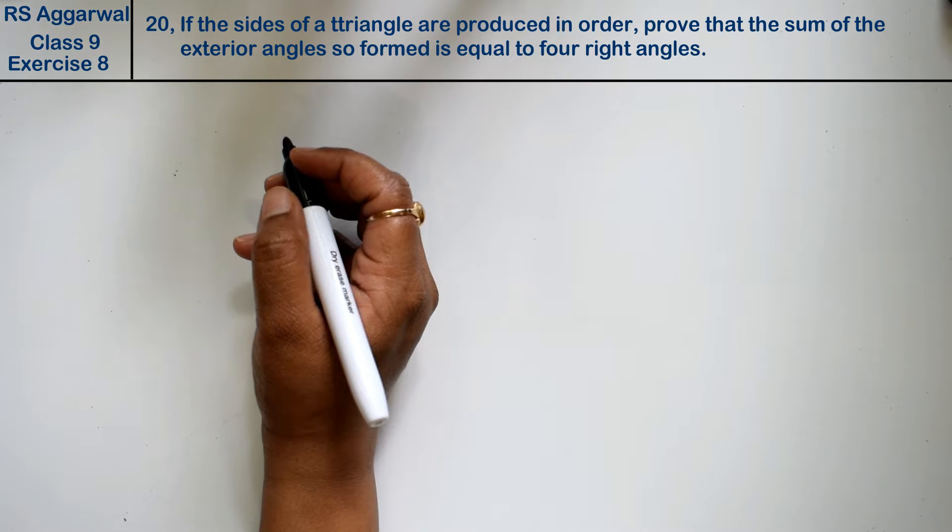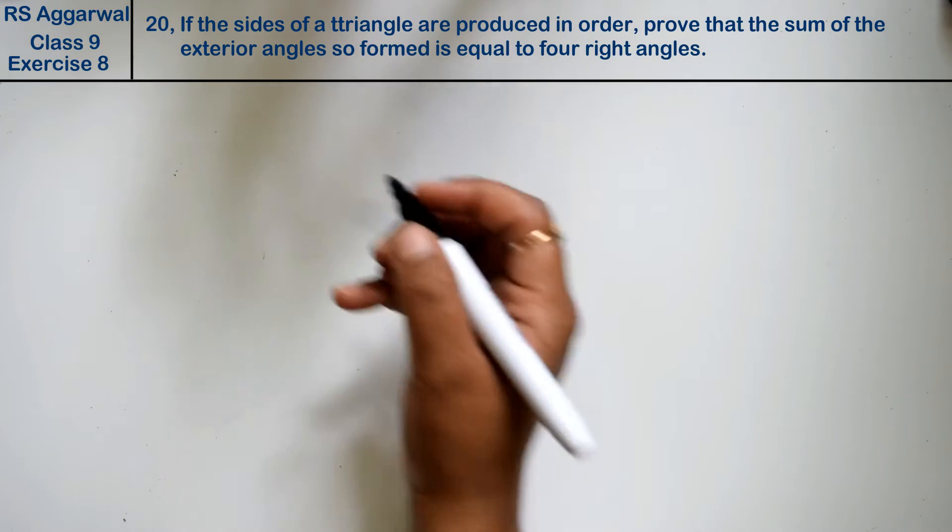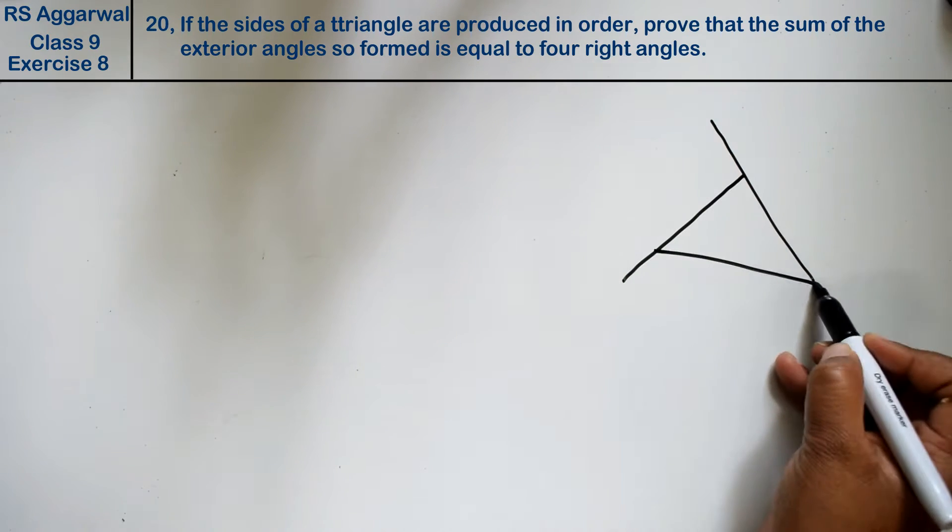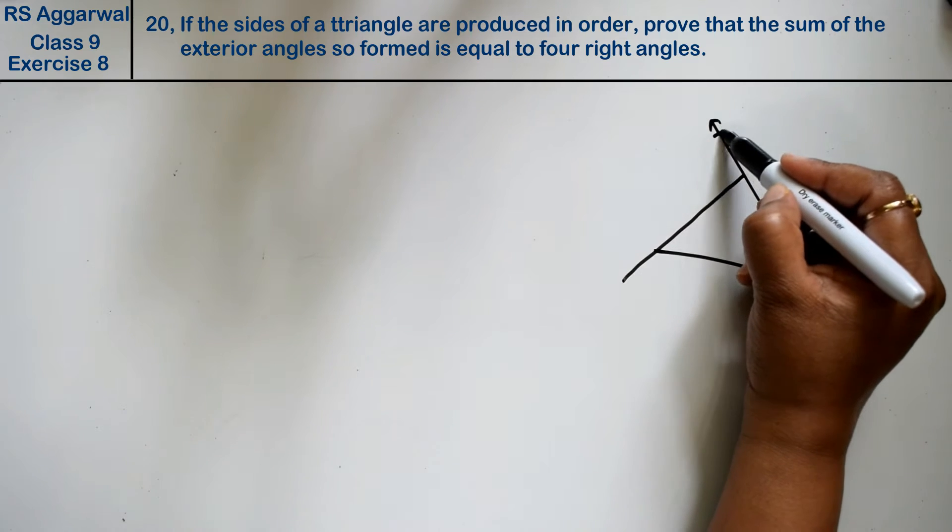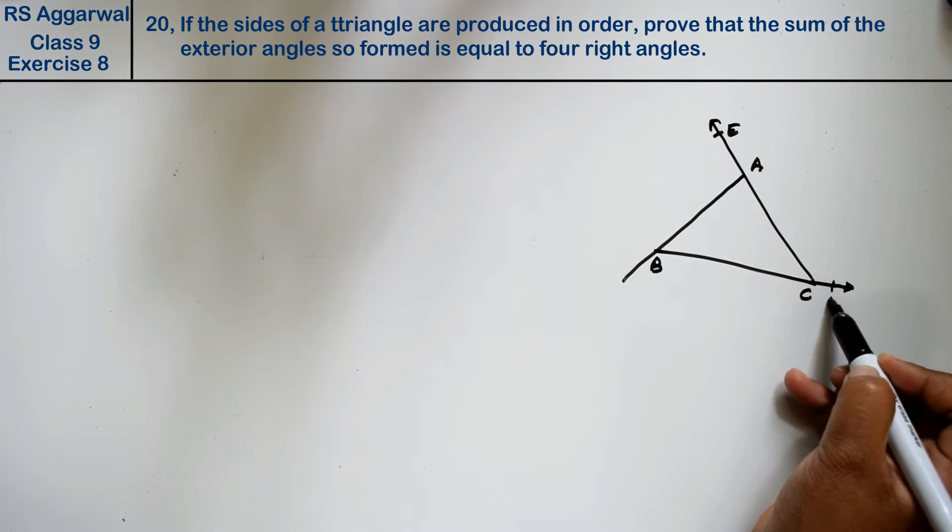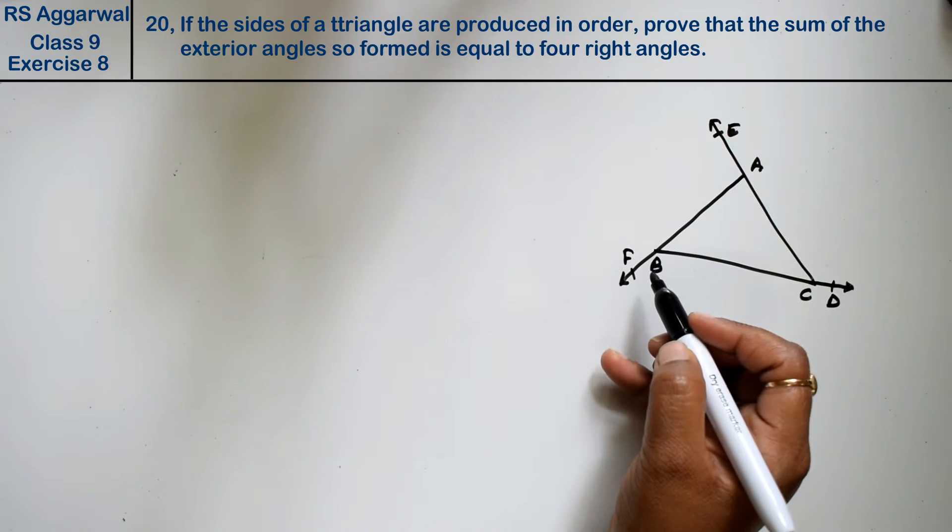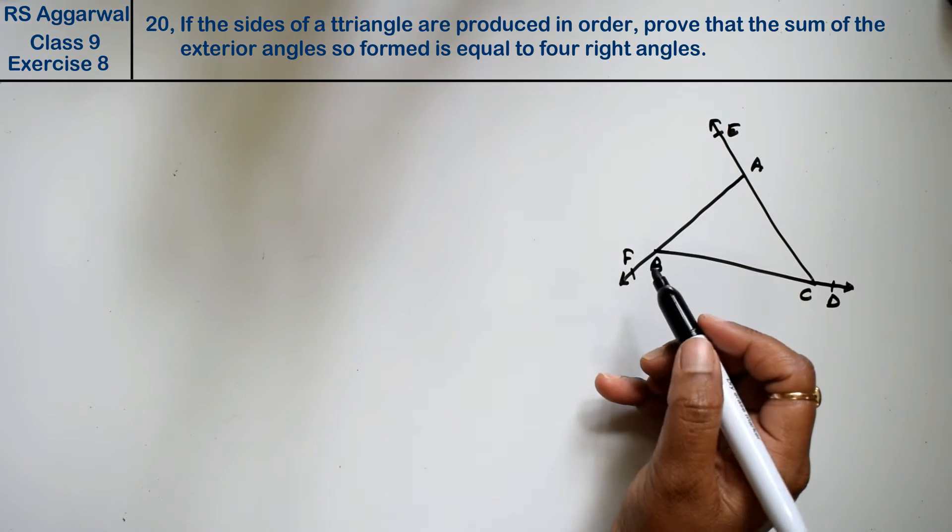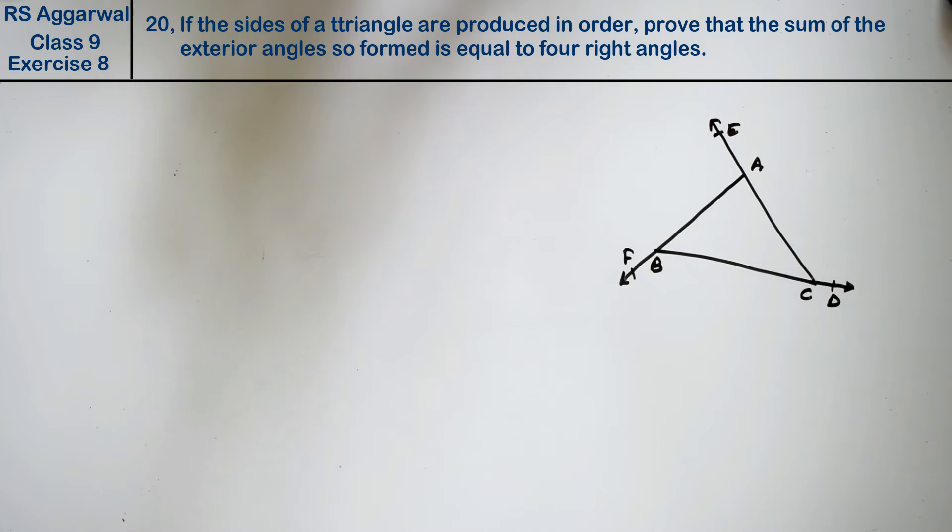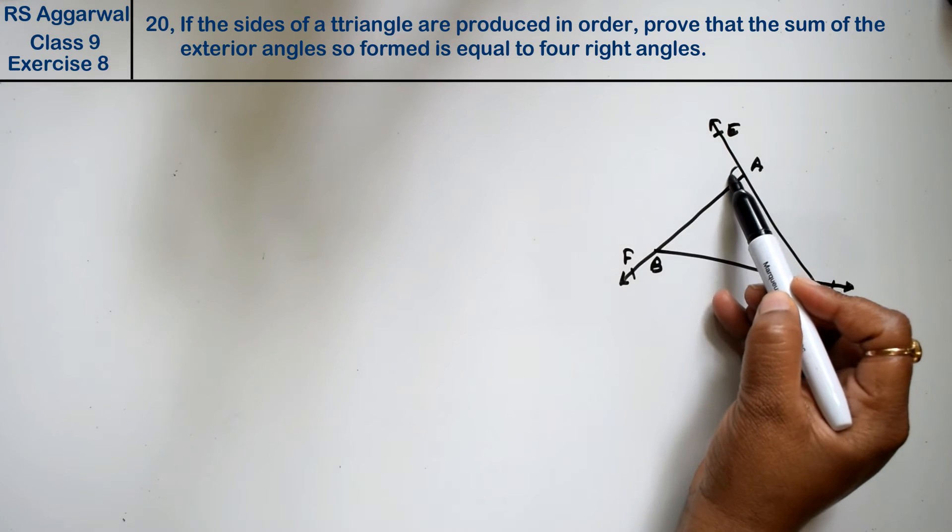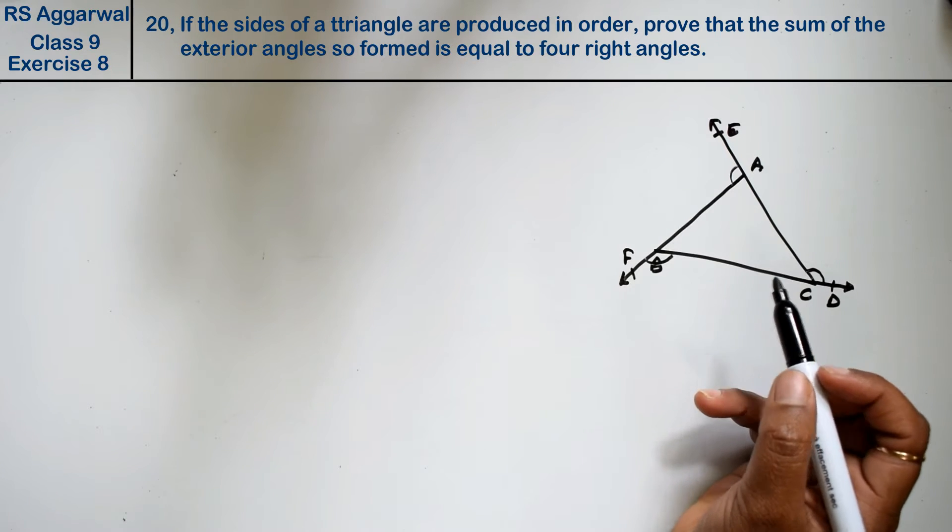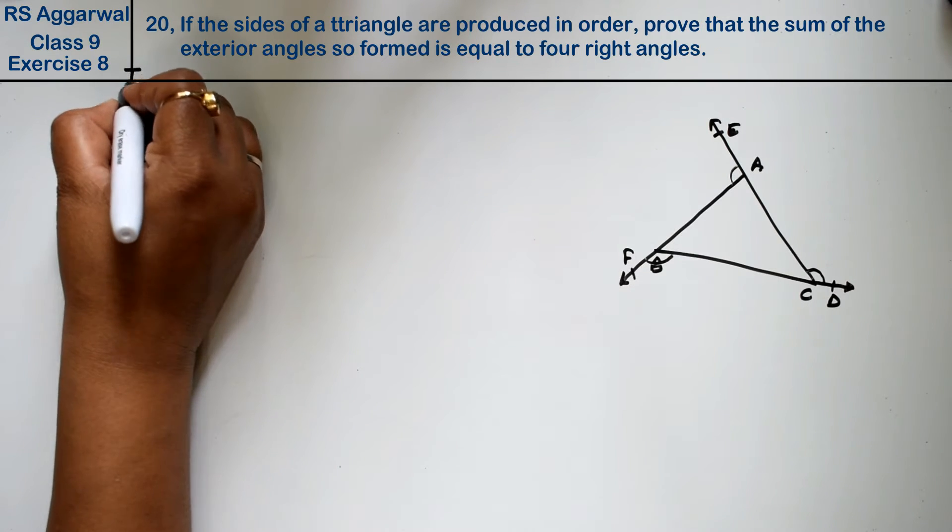Let's do question number 20 of exercise 8 on triangles. In the figure, we have points A, B, C and we extend these sides. If the sides of a triangle are produced in order, prove that the sum of the exterior angles so formed is equal to four right angles.